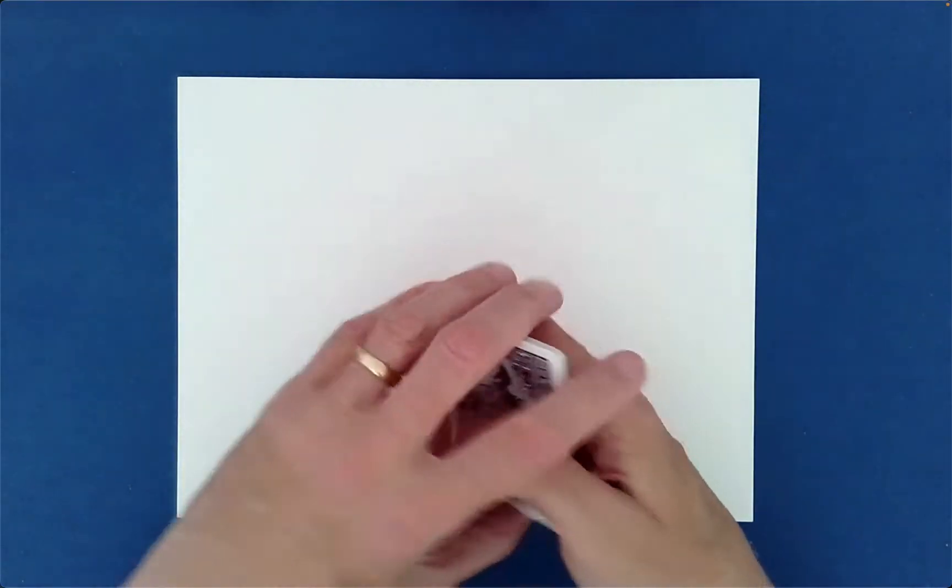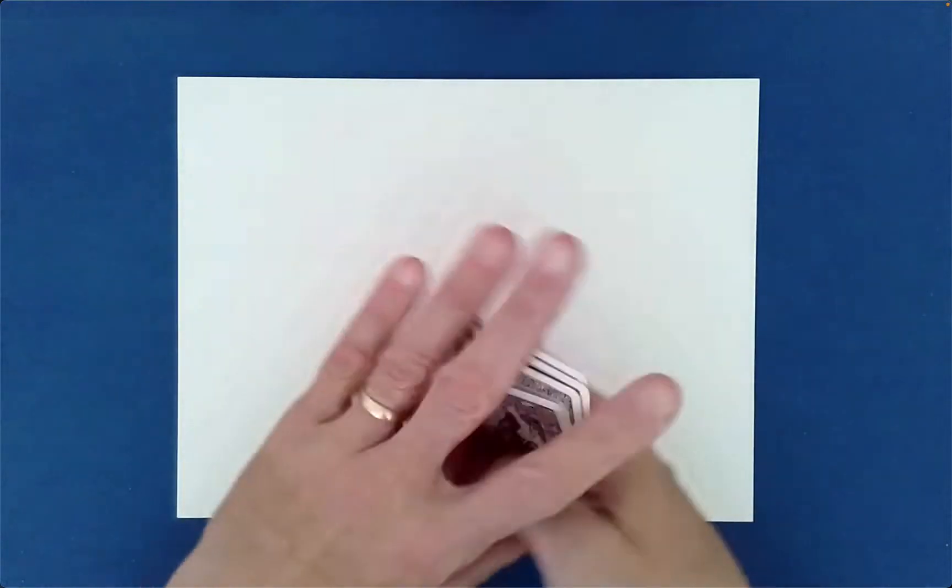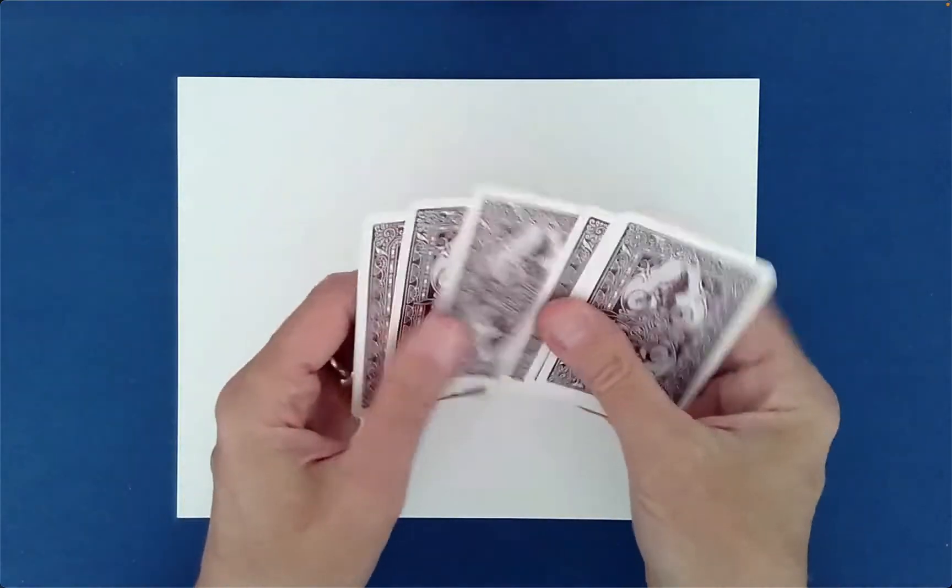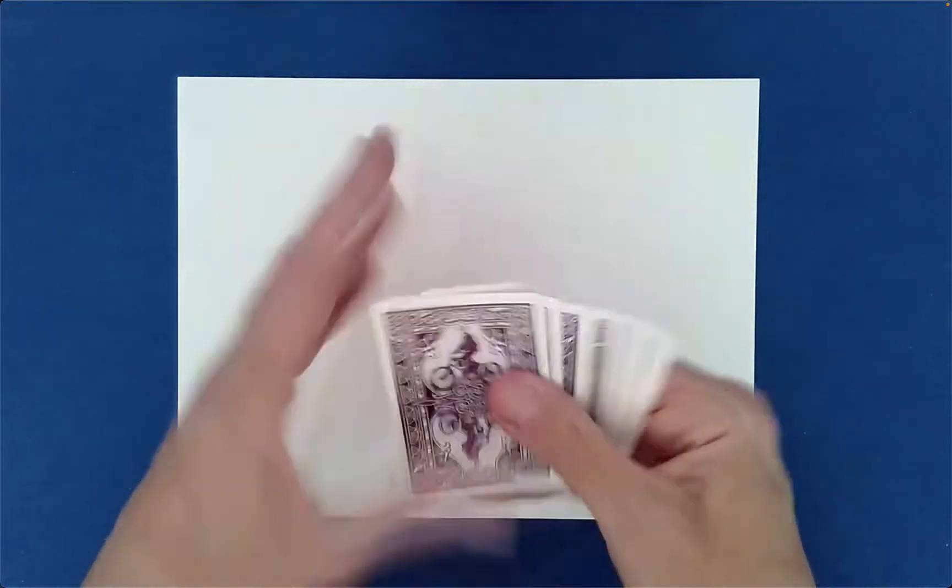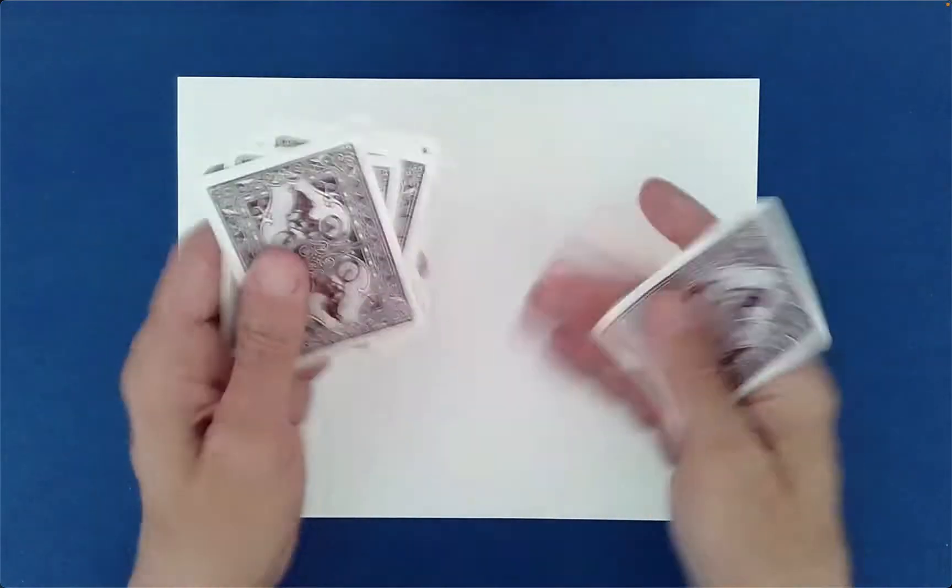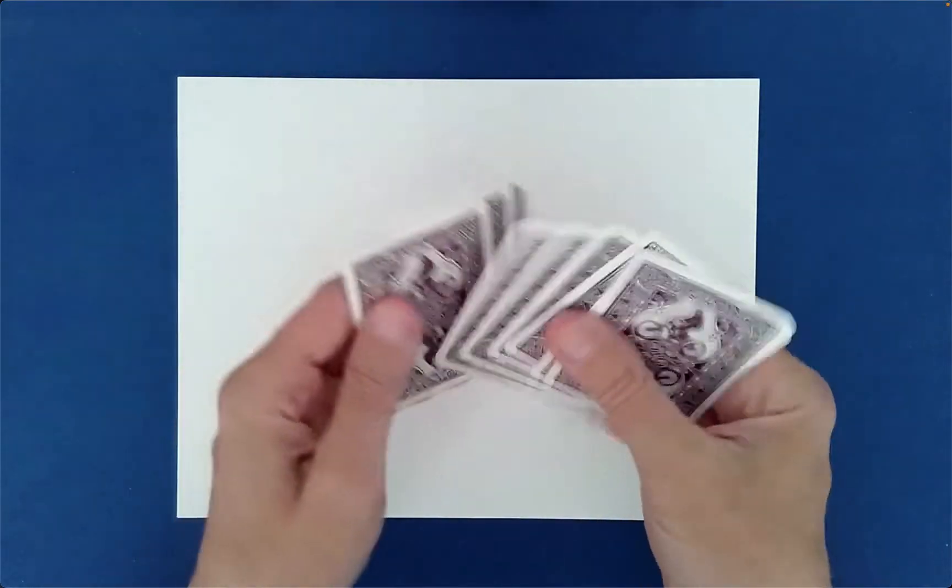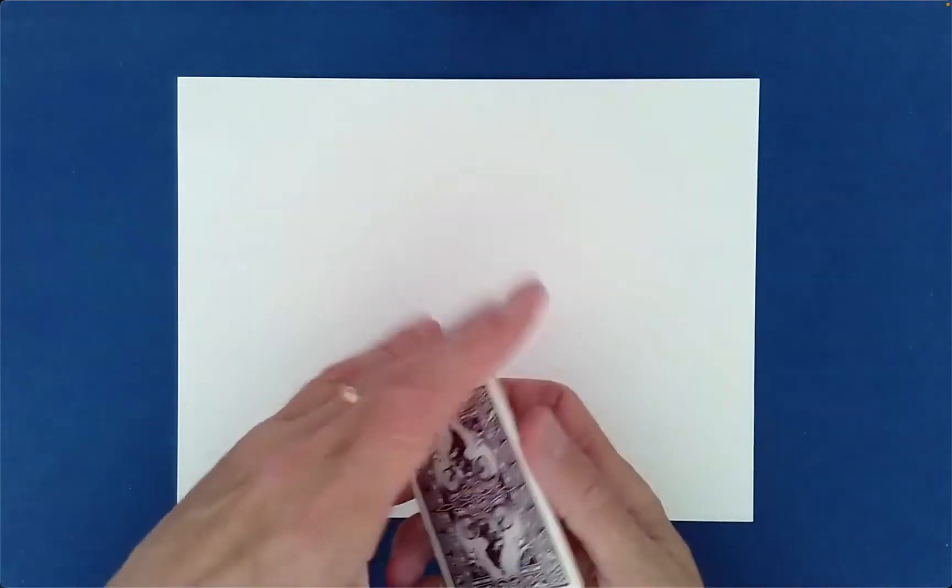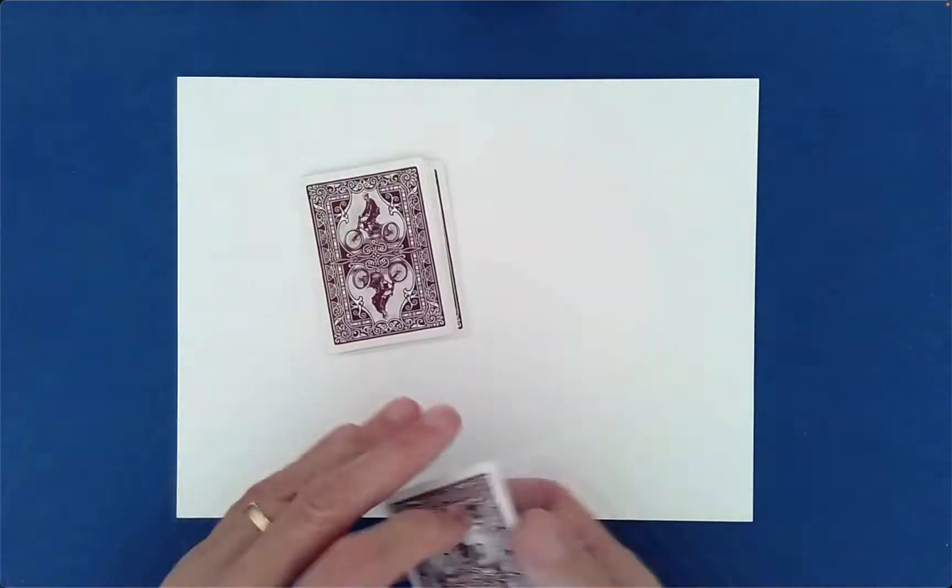I'm going to do something called a Charlier shuffle, kind of a cool shuffle. It's a top to bottom, bottom to top, top to bottom kind of shuffle. I could also, if you were here, allow you to cut the cards wherever you like.